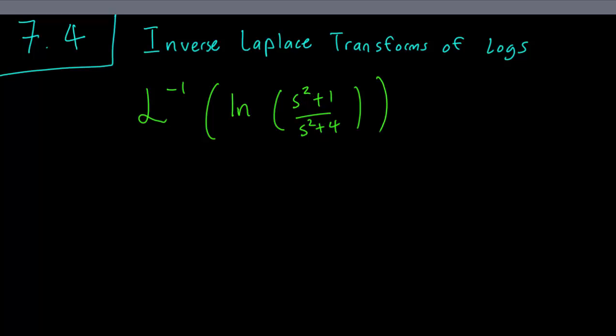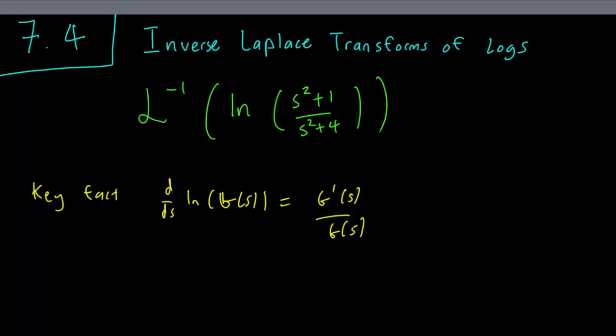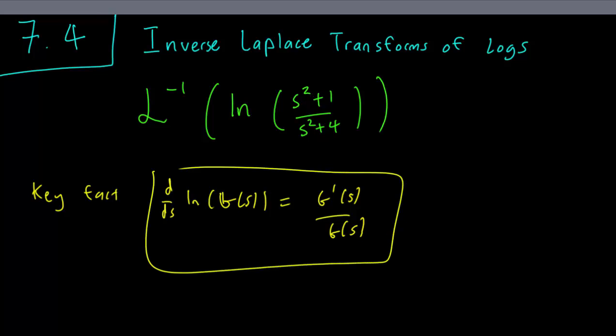There are two ways to do that. You can either take the exponential of a log to get a fraction, but there's nothing in our formula sheet that allows us to take exponentials of terms, so we have to do something else instead. This is where we use our differentiation and integration formulas. The key fact is this property of logs: the derivative of a log g(s) is equal to g'(s) over g(s). This is useful because taking a derivative will change a log into a fraction.